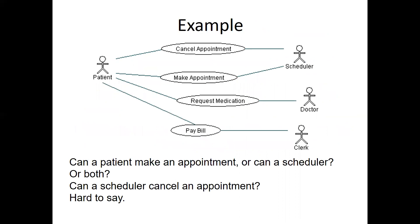For example, can a patient make an appointment, or can the scheduler? In this case, it looks like they both can, because there's no arrow for the patient or the scheduler at the end of the line. This shows that a scheduler can also make an appointment for a customer if they call over the phone, and the patient can also make an appointment using the app. Can a scheduler cancel an appointment? In this instance, it looks like both the patient and the scheduler can.